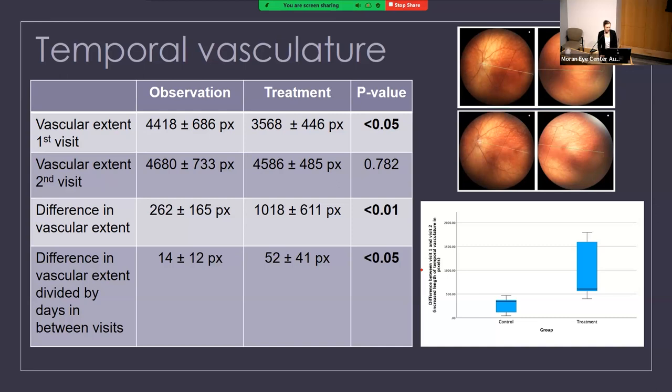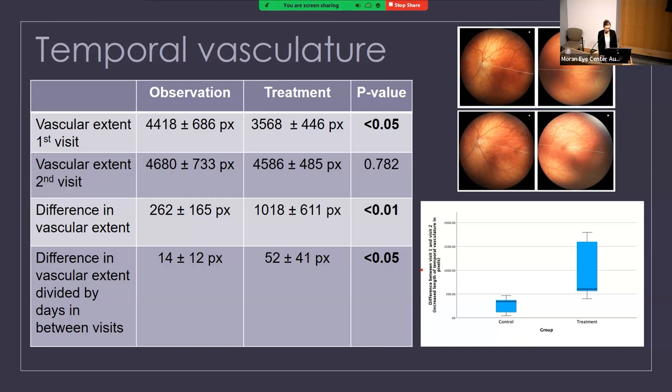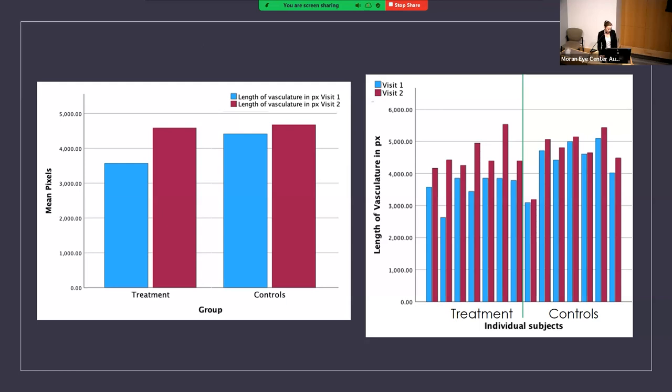This shows how vascular extent increased in the treatment and control groups on the left side, and for each individual patient on the right — treatment patients here, controls over on this side — showing a clear difference between the two groups. We also looked at which area of the temporal periphery experienced the most growth, comparing the area from the optic nerve to the mark versus the area from the marking line to the end of the vasculature.